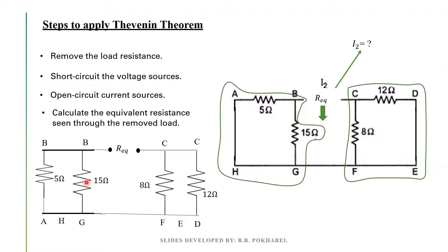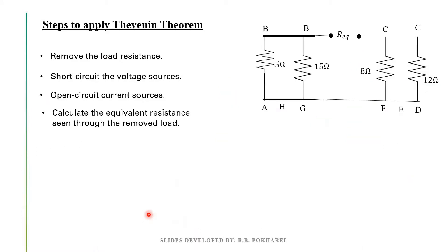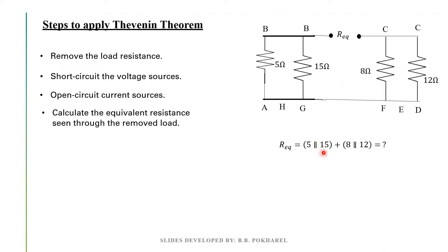The ball is parallel between these 2, and then the equivalent, we have to cross the line between 2 and 2. We have to cross the line. Now, we will have to find the equivalent resistance. How does the equivalent resistance work? 15 and 5 is equal to equivalent resistance. 12 and 8 is equal to equivalent resistance.